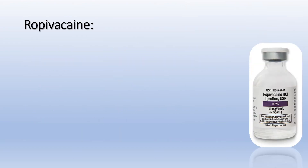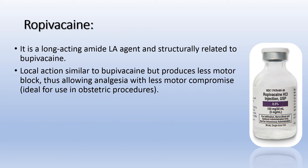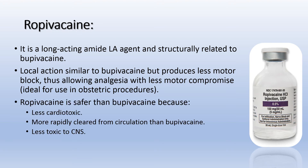Ropivacaine is a long-acting amide local anesthetic agent structurally related to bupivacaine. Its local action is similar to bupivacaine but it produces less motor block, allowing analgesia with less motor component, which is ideal for obstetric use. Ropivacaine is safer than bupivacaine because it is less cardiotoxic, more rapidly cleared from the circulation, and less toxic to the CNS. The available concentration is 5 mg/mL.